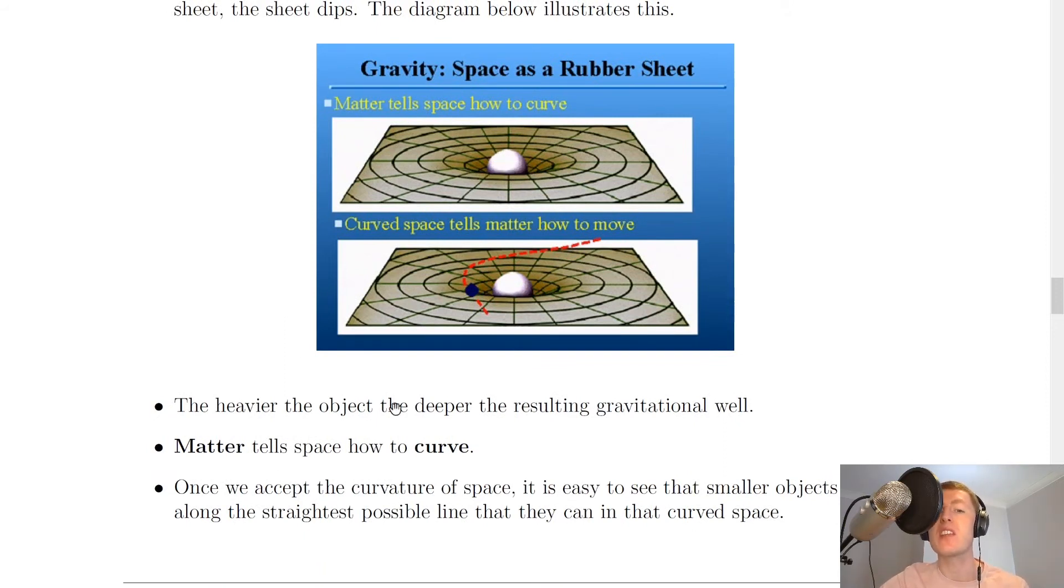And it's the case that the heavier the object, the deeper the resulting gravitational well. So the heavier that mass is, the deeper the gravitational well will be and the more warping of space-time will occur. So we can conclude here that matter tells space how to curve. And that's what this first picture is representing here.